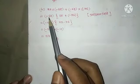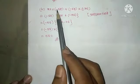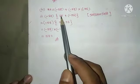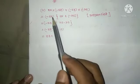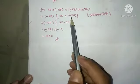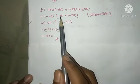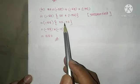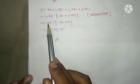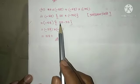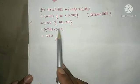Taking minus 58 common: minus 58 into 25 plus minus 35. Now 25 plus minus 35 gives minus 10. So we have minus 58 into minus 10.